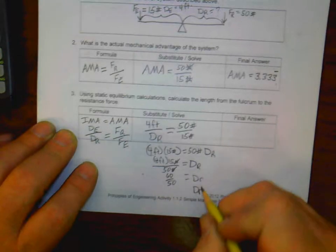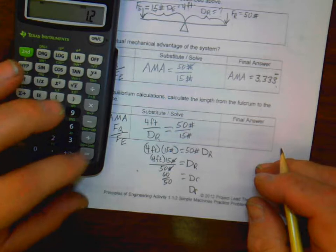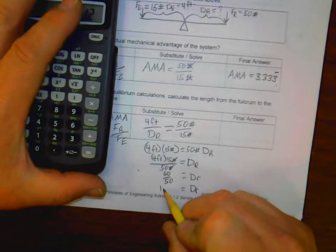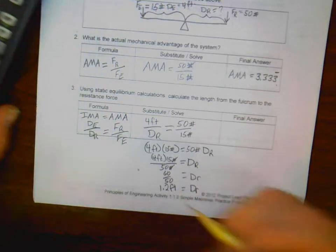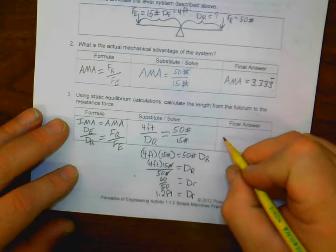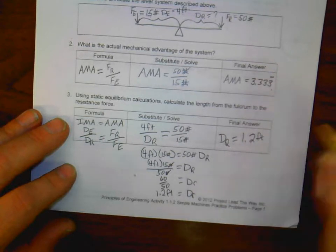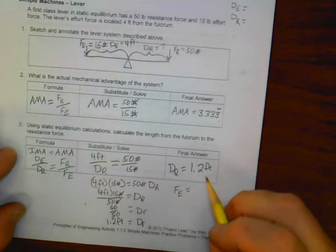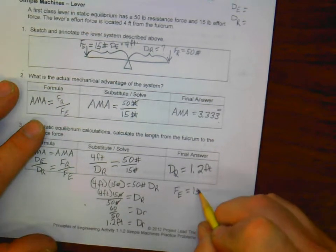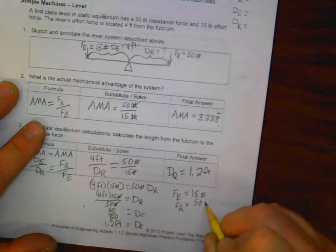So my final answer here for my distance to the resistance is 1.2 feet. Just a recap, going back up here. My FE was equal to 15 pounds. My FR was equal to 50 pounds. My DE was equal to 4 feet. And my DR was equal to 1.2 feet.